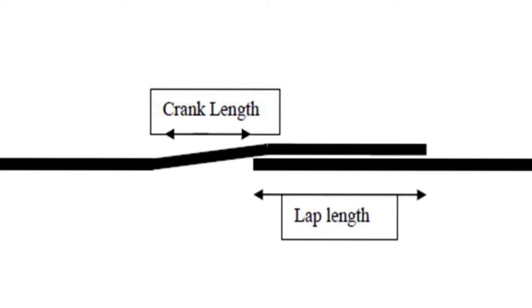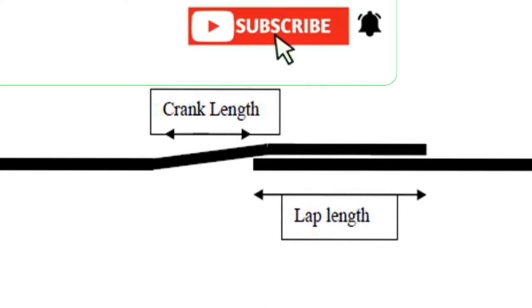When you're going to lap the steel bar, there is a bend in steel we call crack length. There is a formula to calculate the bend: 6D is the formula, 6 into diameter of steel bar. If you use 20mm steel bar, you should multiply 6 into 20.